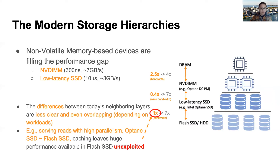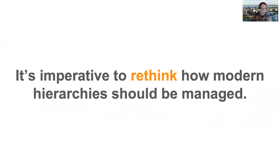Consider a case in the Optane and Flash SSD two-layer hierarchy. When serving reads with higher parallelism, these two devices actually provide very similar performance. In this case, caching optimizing hit rate will be single-minded in directing most accesses to the Optane SSD, and it will leave huge performance available in Flash SSD unexploited. Based on our observations, we believe it is imperative to rethink how modern hierarchies should be managed.